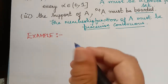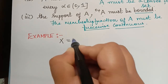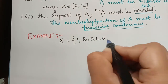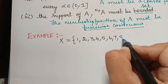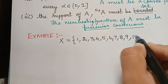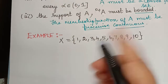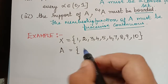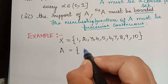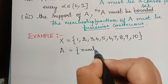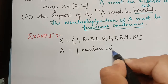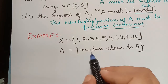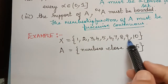Let us consider a universal set capital X whose members are 1, 2, 3, 4, 5, 6, 7, 8, 9 and 10. Now let me define a fuzzy set A as all those numbers that are close to 5. This is the fuzzy set under the universal set X.